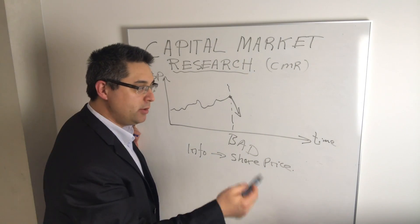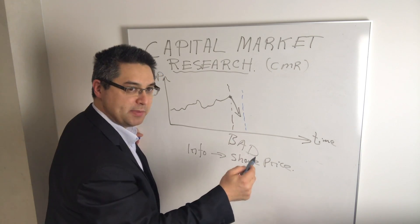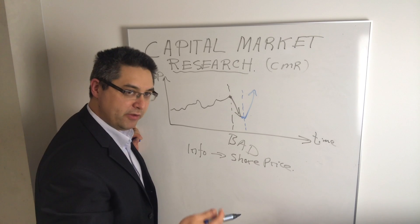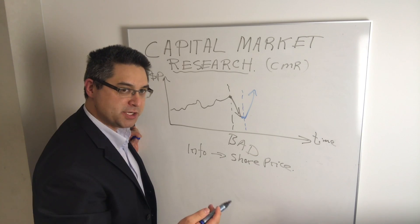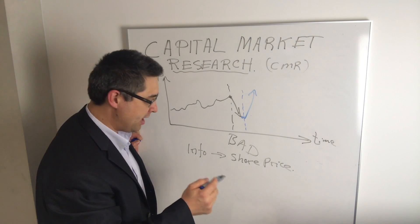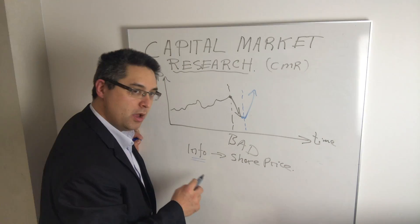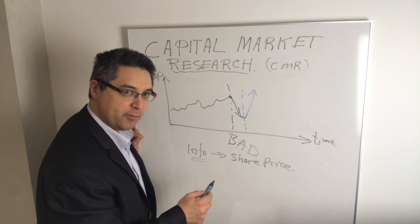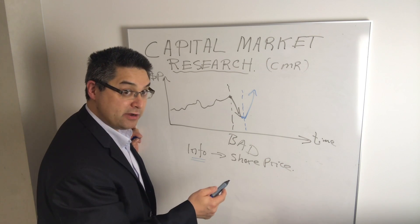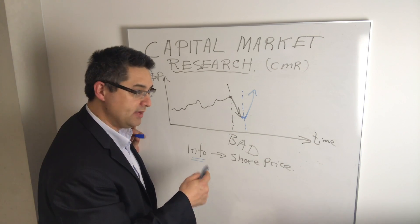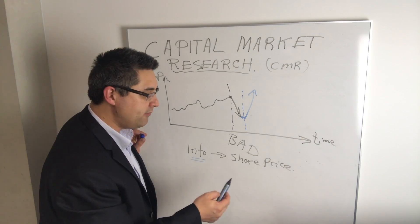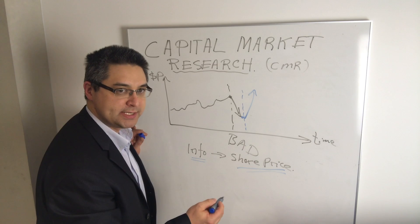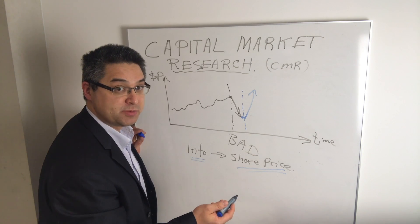There would be the reverse if there was any good information. So if the next day there was some good information about that particular stock, the stock will of course increase in value. It's the same information-share price relationship, where information leads to either an increase or decrease in future profitability, and therefore increases or decreases the dividends a shareholder can receive — impounded into the share price today, as soon as that information is released.